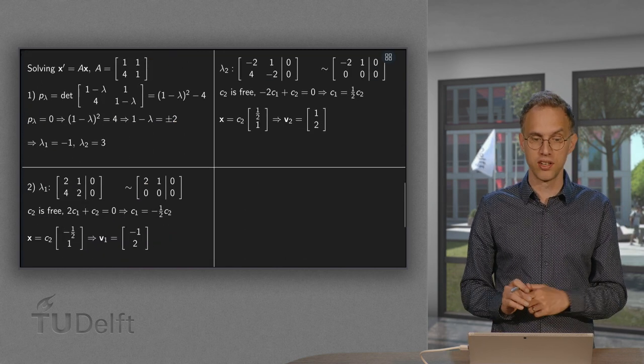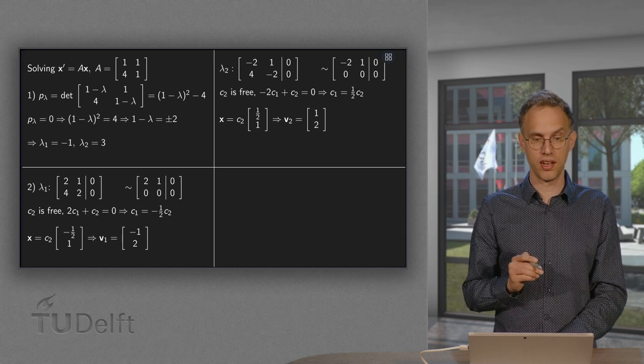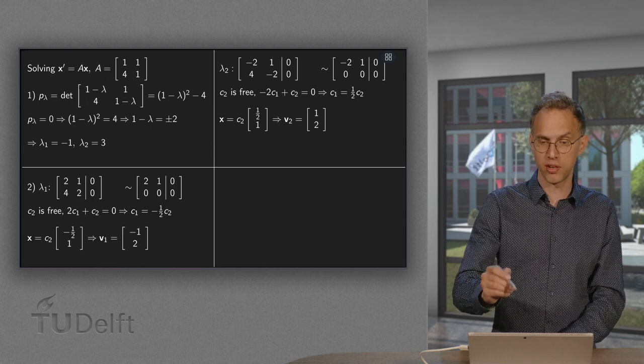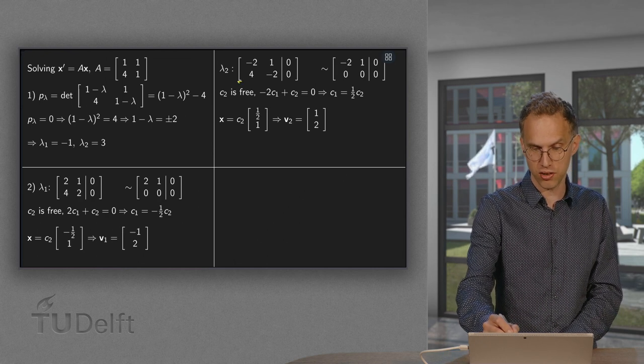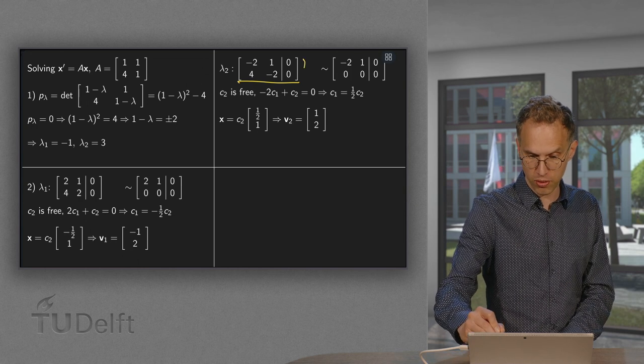Then, second eigenvalue, same idea. A minus λ₂ times identity matrix. So now you have to subtract 3 from the diagonal and add 0. So we get over here. Now we do plus 2 over here.